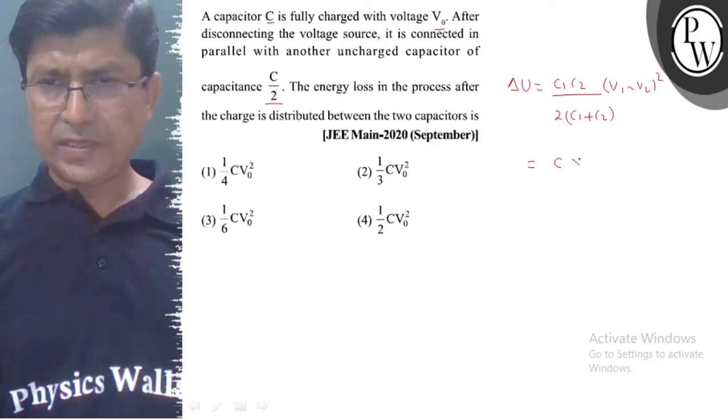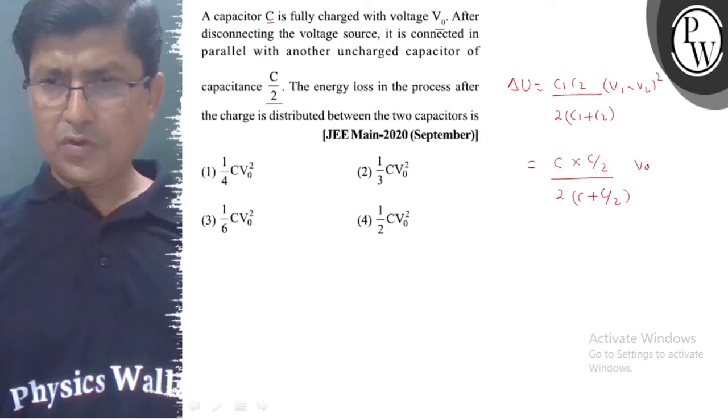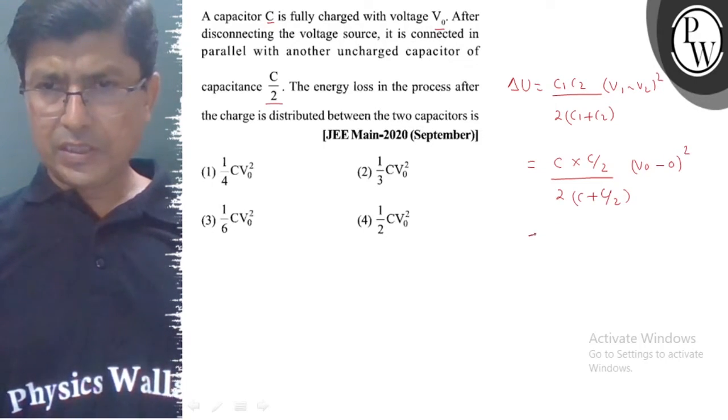...C, C2 is C/2, upon 2(C plus C/2), times V0 minus 0 whole square. It equal ho jayega...